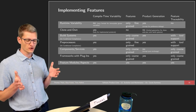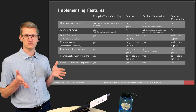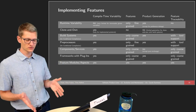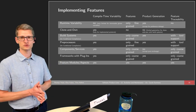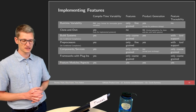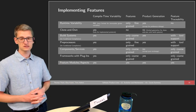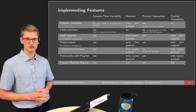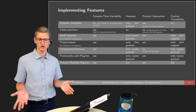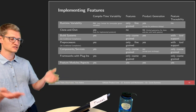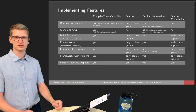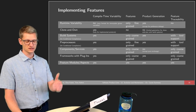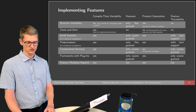For every implementation case, it's always a decision which technique to use and which technique is better than others. This might also change during development. We might start with clone and own because we only have two products, then three, then four — and when we reach 10 or 20 products, we have maintenance problems and decide to move to a more structured reuse technique.